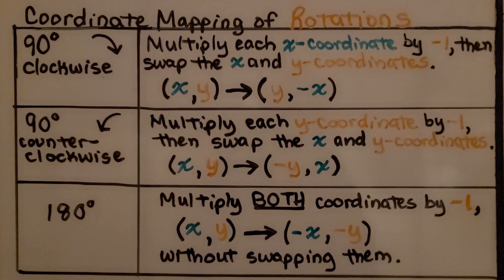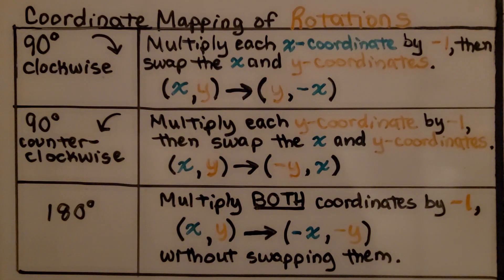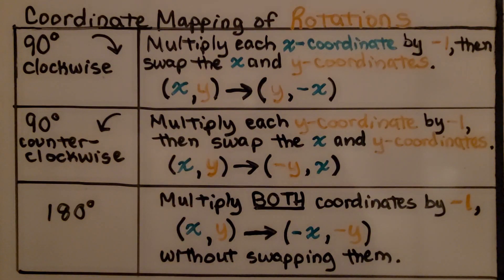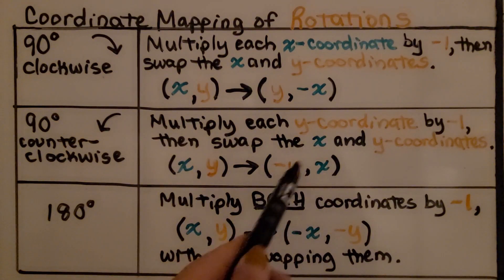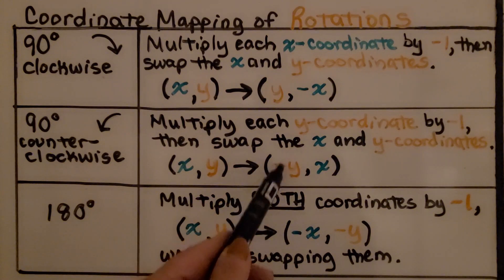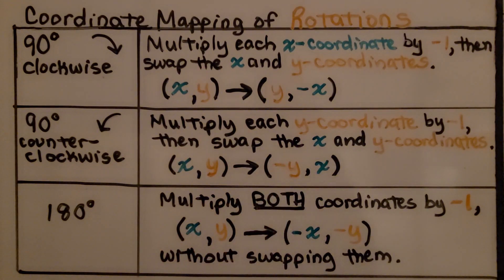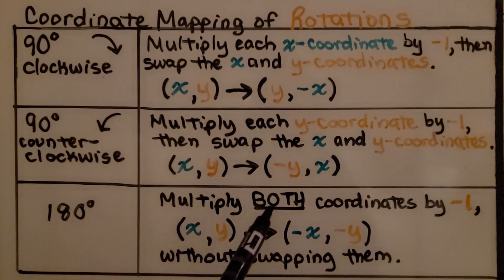For 90 degrees counterclockwise, which is negative 90 degrees, we multiply each y-coordinate by negative 1, then swap the x and y-coordinates. So negative y becomes the new x and x becomes the new y. When we rotate 180 degrees, we multiply both coordinates by negative 1 without swapping them.